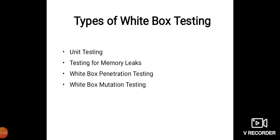For example, consider a software testing book with 12 chapters, meaning 12 modules. Each of those 12 modules is one unit, and every unit will be checked by the testers — this is unit testing. Then, all the units are combined to complete the full book. Combining all units and testing together is known as integration testing. So first we do unit-wise testing, then combined testing, which is integration testing.